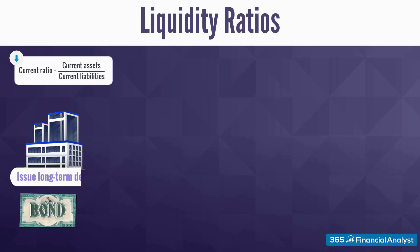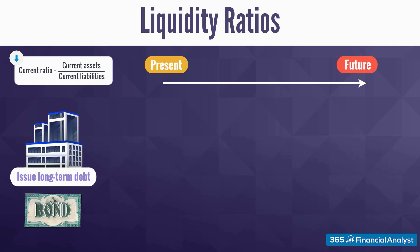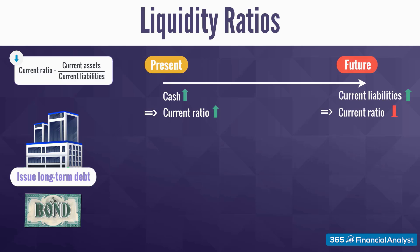Suppose a firm decides to issue long-term debt to raise capital. In the short run, such a strategy will increase cash availability, and consequently its current ratio will improve. However, in the long term, the organisation's current liabilities will increase as the debt becomes due. Therefore, in later years, liabilities will exceed the assets in place and the current ratio will deteriorate. The moral of the story is that we need to interpret liquidity ratios together with the context in which they are calculated.